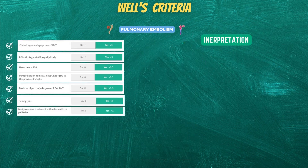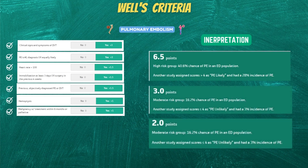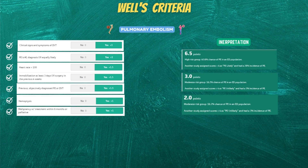On a scale of 1 to 12.5: above 6.5 is high risk, between 3 and 6.5 is moderate, and below 3 is low risk of pulmonary embolism. Note that the high risk group has a 40.6% chance of PE in an ED population. Another study assigned scores above 4 as PE likely, with a 28% incidence of PE.